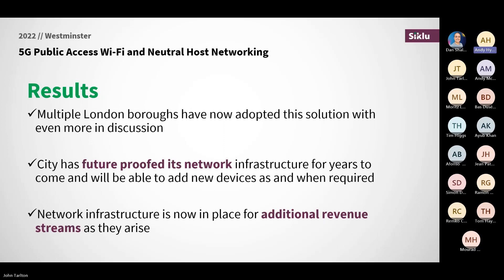We've built a footprint of Siklu mesh network which operates as a neutral host network. Across that, we have the ability to run multiple services of more or less any description — public Wi-Fi networks, high-capacity Wi-Fi 6, high-density outdoor coverage, CCTV systems with full streaming HD 4K video, multiple IoT services in parallel, and connectivity to MNOs for small cell densification in metropolitan urban areas. It's a solution that's really only possible using millimetre wave technology, in order to get the reach we need into the areas where those services are required, but also giving us the ability to rapidly deploy and redeploy as and where required.